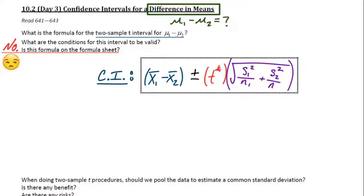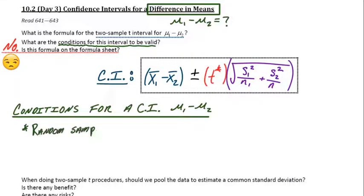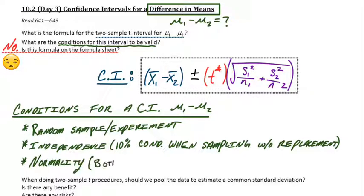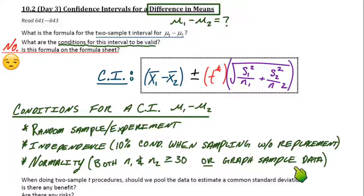Is this formula on the formula sheet the way it's written? No, unfortunately not. How about the conditions for inference when we're making this confidence interval? Really, it's the same ones we're used to. We know we have to have data from a random sample or experiment. We have to have independence, which if we're sampling without replacement, we prove that with the 10% condition. And lastly, don't forget, we have to have normality. So either both samples are at least 30, which is the central limit theorem, or if we have a small sample size for the samples, we have to take a look at the sample data and hope that we can just assume it came from normal parents.